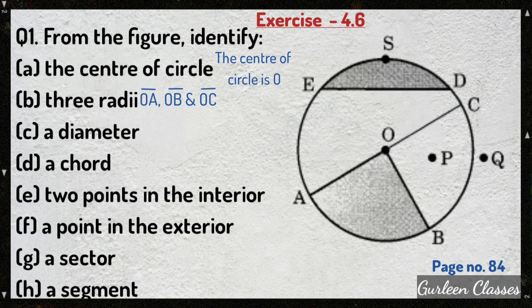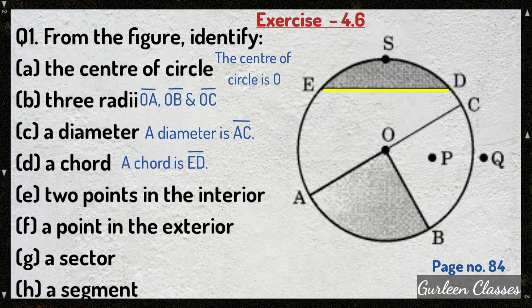Part C: a diameter. A diameter is a chord passing through the center of a circle. Here, diameter is line segment AC, as it passes through the center, which is point O. Part D: chord. Chord is a line segment joining any two points on the circle, so the chord is line segment ED. Part E: two points in the interior. Two points inside the circle are O and P. Part F: a point in the exterior. The point outside the circle is Q.